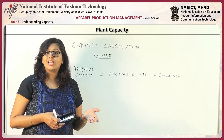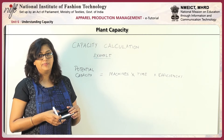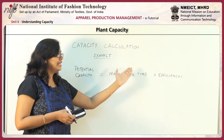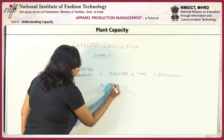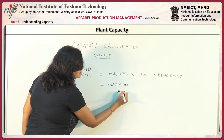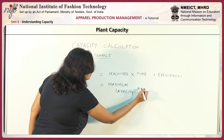Now that we have calculated maximum capacity, we can easily calculate the potential capacity. Potential capacity uses the same formula — machines × time — but includes efficiency as an added factor. So, potential capacity = maximum capacity × efficiency.